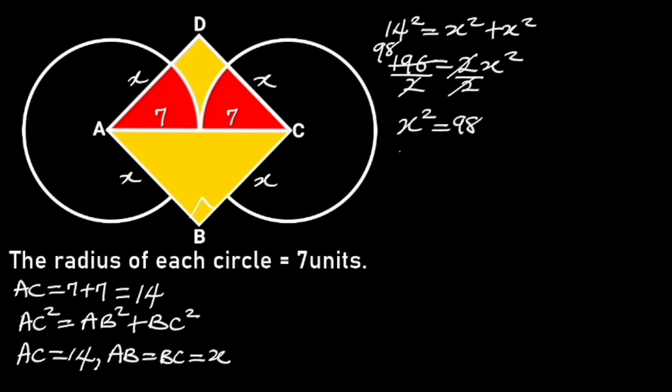And if we take the square root of both sides, we will get the side of the square. Since the area of a square is the square of its length, and we have X squared is equal to 98, which is the square of the length of the square, it follows that the area of the square is equal to X squared, which is equal to 98.